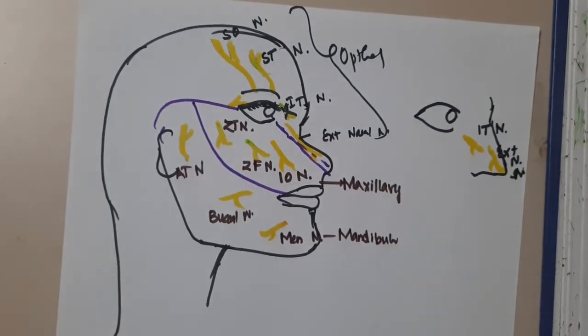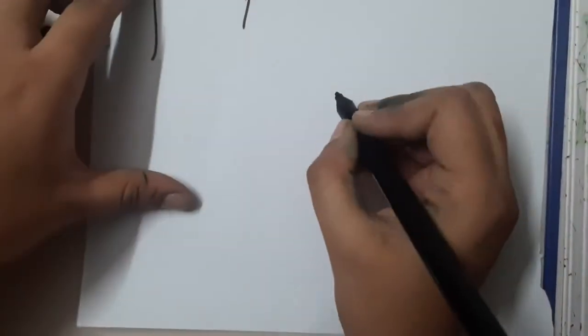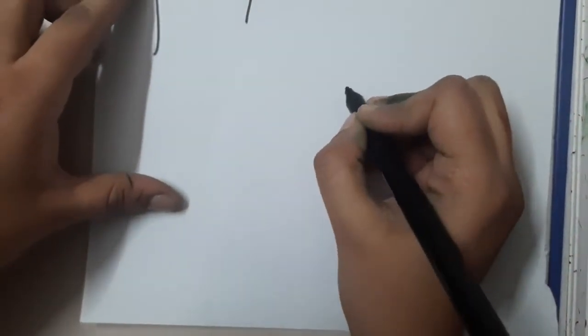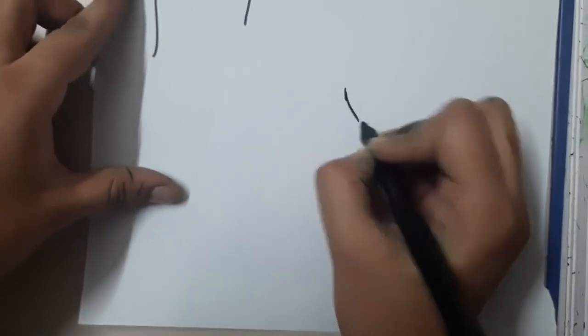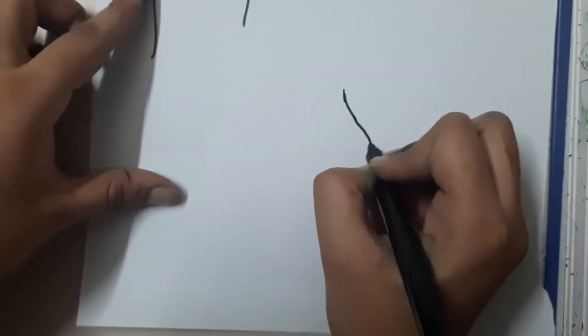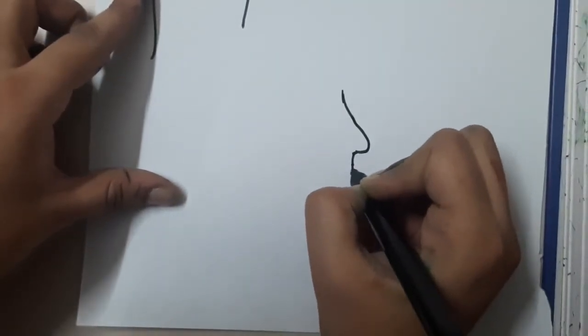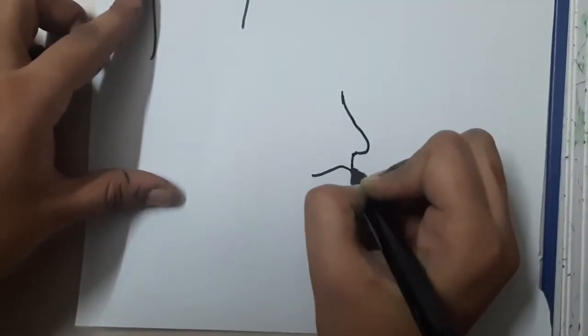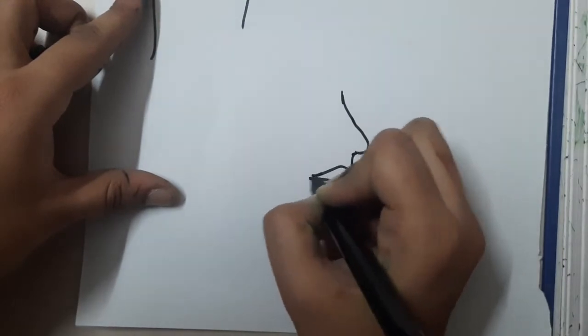That covers the sensory supply and their nerves. I will draw the diagram once more to summarize, because the previous picture became unclear — I don't want anyone to get confused or receive wrong information.